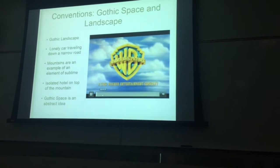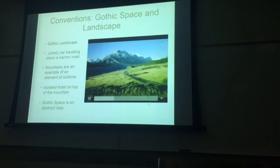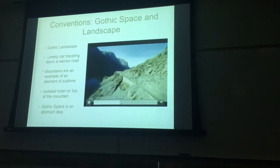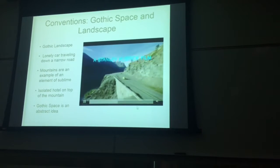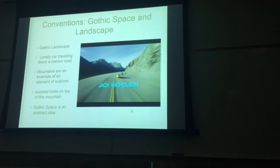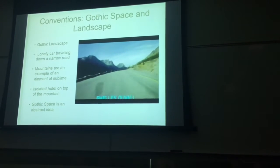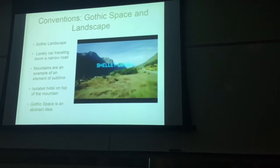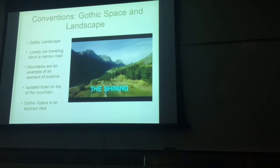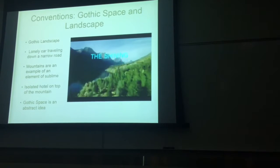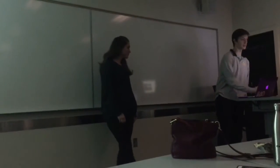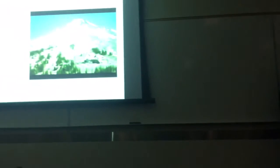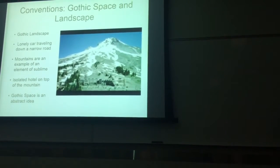For example, you have the intro to the movie The Shining, where you see a car traveling alone on a narrow road next to a mountain. In the background you can see mountains, which serve as an example of the element of the sublime — which gothic horror scholars describe as something with a duality where it can be beautiful and deadly at the same time. From far away they seem beautiful and majestic, but by their nature they can kill you. At the end of the scene, the car arrives at the setting of the movie — a hotel on top of a mountain, in isolation, which can be home to all sorts of others.